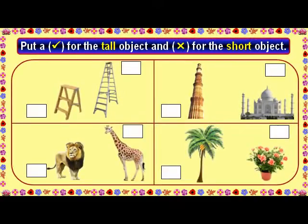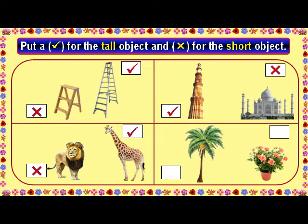Put a tick for the tall object and a cross for the short object. The wooden ladder is short. The steel ladder is tall. The Qutub Minar is tall. The Taj Mahal is short. The lion is short. The giraffe is tall. The coconut tree is tall. The rose plant is short.